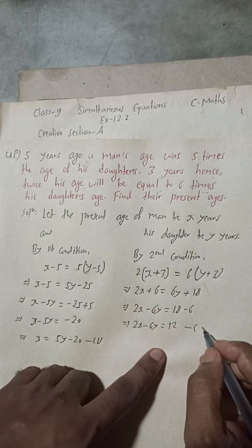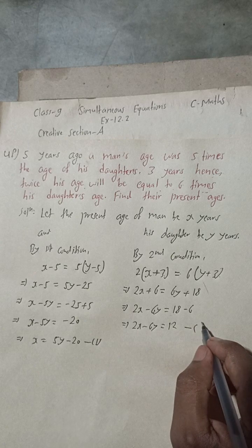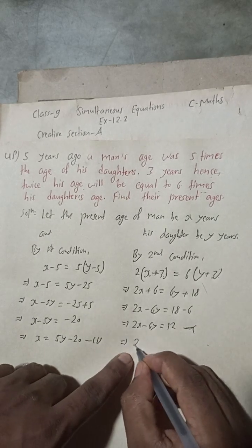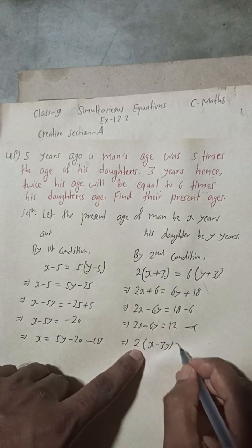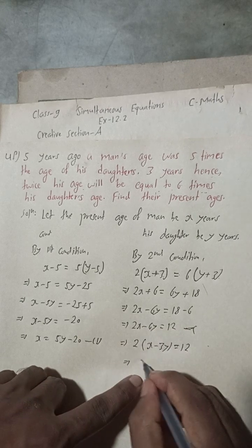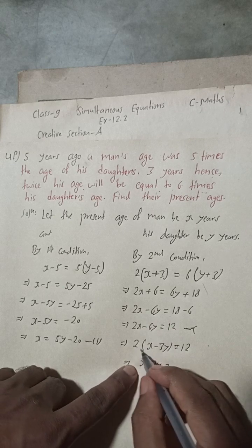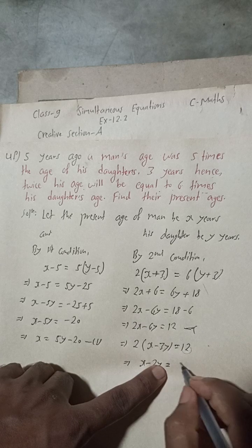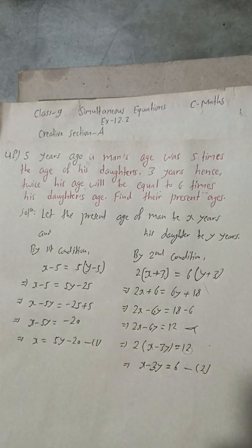We can take 2 as common from 2x minus 6y = 12, giving x minus 3y = 6. This is equation 2.